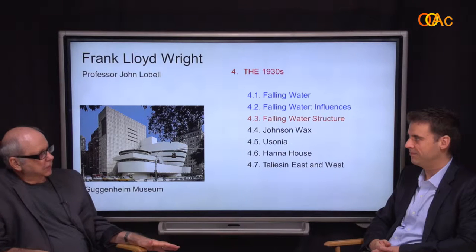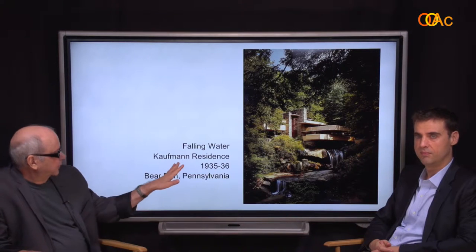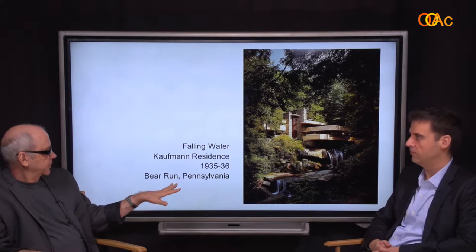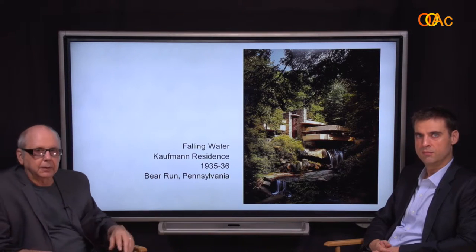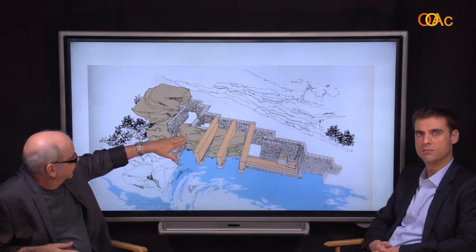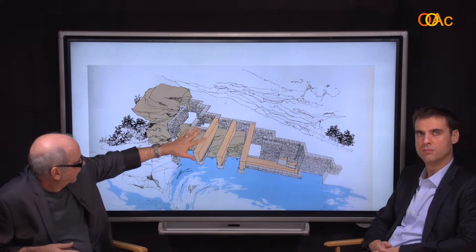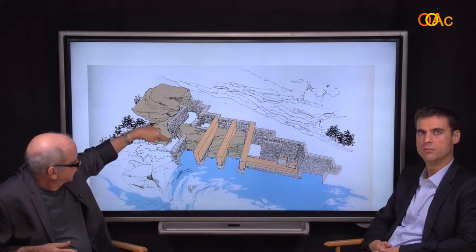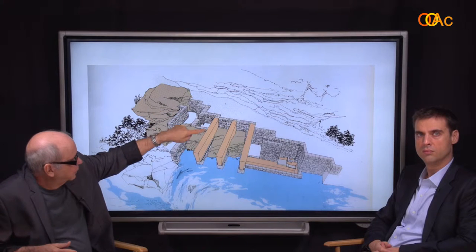We see cantilevers all along — these are the most ambitious. Falling Water is the Kaufman residence, a weekend house, 1935-36, outside of Pittsburgh, Pennsylvania. Here's the rock on which they picnicked, and Wright builds right into this. He uses field stone, which is quarried locally.